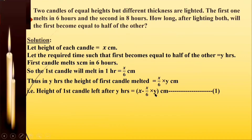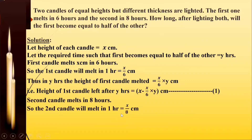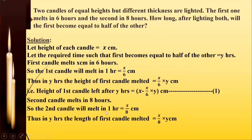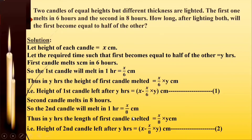Now for the second candle: it takes eight hours to melt x centimeters. So in one hour it melts x upon 8 centimeters, and in y hours it will melt x upon 8 into y centimeters. Initially we had x centimeters height, so the height of the second candle left after y hours will be x minus xy upon 8 centimeters.